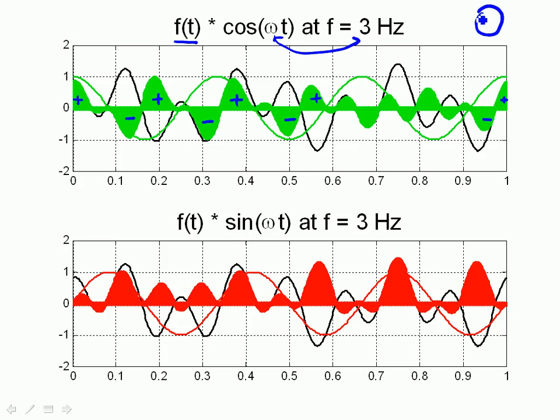Because with the function I've defined, which is, remember, 0.6 sine of 3 hertz plus 0.8 cosine of 8 hertz, at a frequency f equals 3 hertz, there is no sine component, so I would expect to get 0.